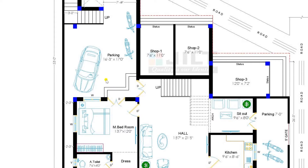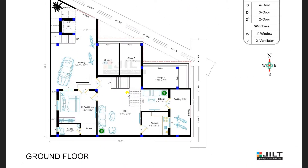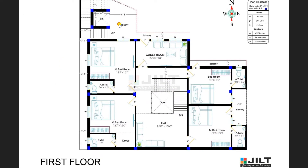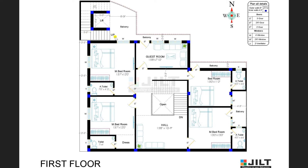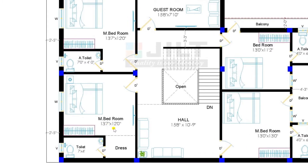From this side you can move towards the master bedroom and towards the first floor. Now moving to the first floor plan. Entering through the inside staircase, when reaching the first floor the hall is having a dimension of 15 feet 8 inches by 10 feet 9 inches. On the left hand side there is a master bedroom of size 13 feet 7 inches by 12 feet along with a toilet of size 7 feet 4 inches and a dressing room.